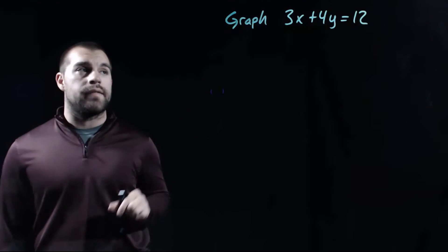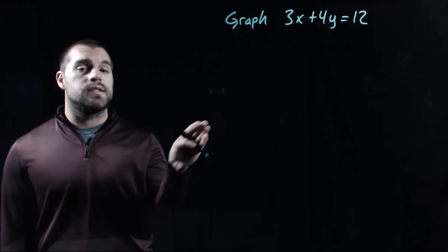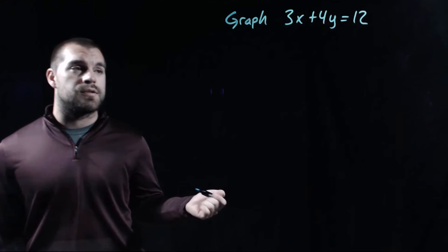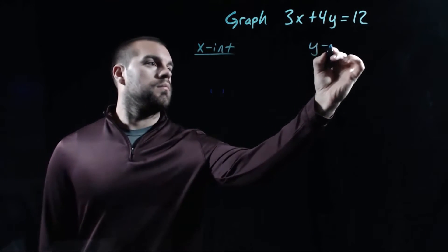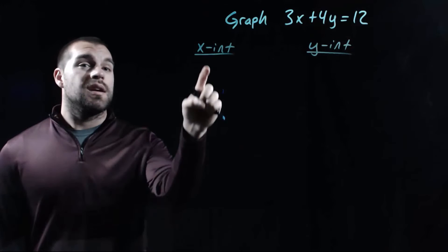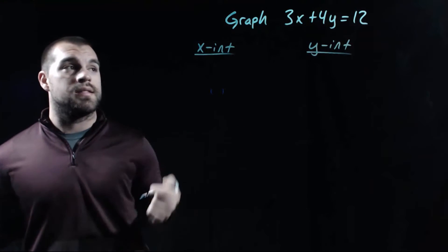In this last example, we're going to graph out the equation 3x plus 4y equals 12. Since this one is in standard form, I'm going to graph it out by finding the intercepts. So remember, we've got x-intercepts and we've got y-intercepts. In order to find x-intercepts, we're going to plug in a zero for our y and then simplify it down.